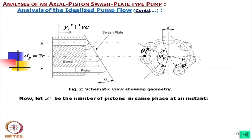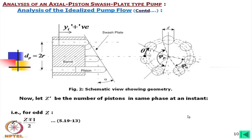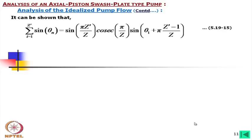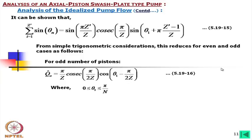We define z' as the number of pistons in the same phase at any instant: (z+1)/2 or (z−1)/2 for odd numbers, and z/2 for even numbers. This expression can be expanded in trigonometric form, and for simple trigonometric consideration, it reduces for even and odd cases as follows.